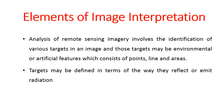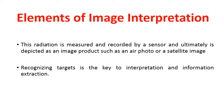Elements of Image Interpretation: Analysis of remote sensing imagery involves the identification of various targets in an image. Those targets may be environmental or artificial features which consist of point, line, and areas. The target may be defined in terms of the way they reflect or emit radiation. This radiation is measured and recorded by the sensor and ultimately depicted as an image product such as an air photo or a satellite image.